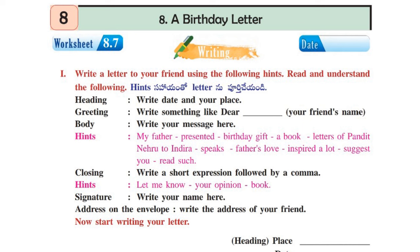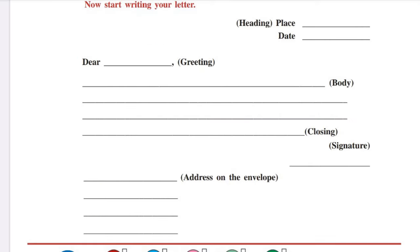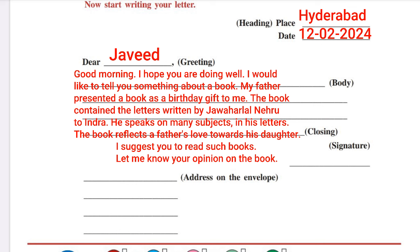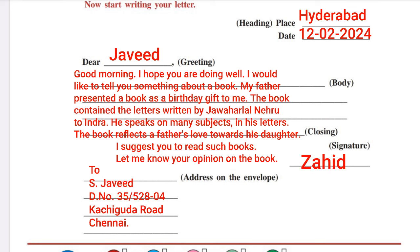Let's move on to worksheet number 8.7. Here one letter is given with heading, greeting, body of the letter, closing, signature and everything as hints. You have to write down a letter to your friend using all these hints. In the heading part, write down the place — for example Hyderabad — then the date. Then Dear, followed by your friend's name. In the body: Good morning. I hope you are doing well. I would like to tell you something about a book. My father presented me a book. The book contains the letters written by Jawaharlal Nehru to Indira. He speaks on many subjects in his letters. This book reflects a father's love towards his daughter. I suggest you to read such books. Let me know your opinion on the book. After that, write your signature — your name — and at the bottom left side write the address of the person you are sending it to.